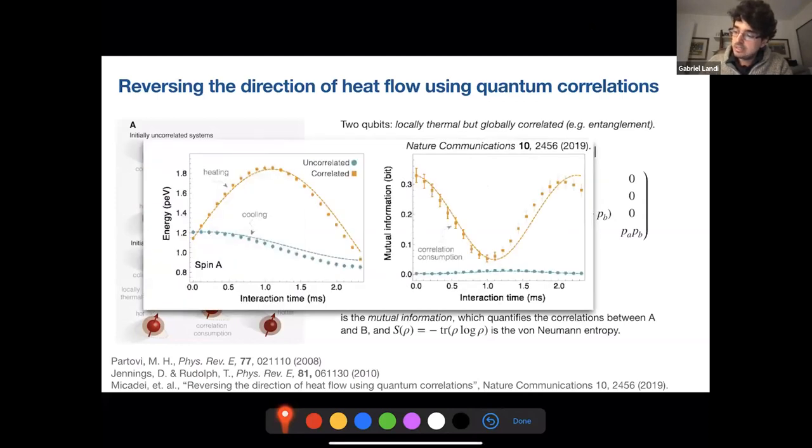So if you consume mutual information, if this quantity here is negative, if you end up with less mutual information than you had before, then it's possible to make heat flow from cold to hot. And this is shown here in the experiment. So this is energy and this is mutual information. The uncorrelated case that we had before, you have heat flowing from hot to cold. So this guy and the mutual information is just here, tiny. But when there's initial correlations, heat flows in the opposite direction, it now flows from cold to hot, in the opposite direction, and you're actually consuming mutual information.